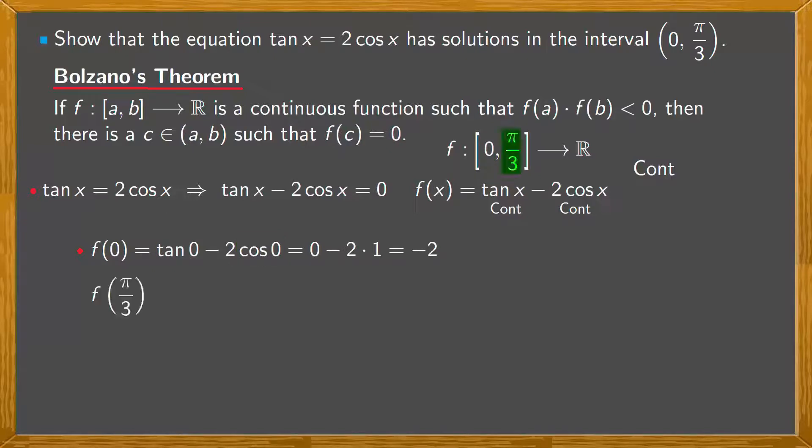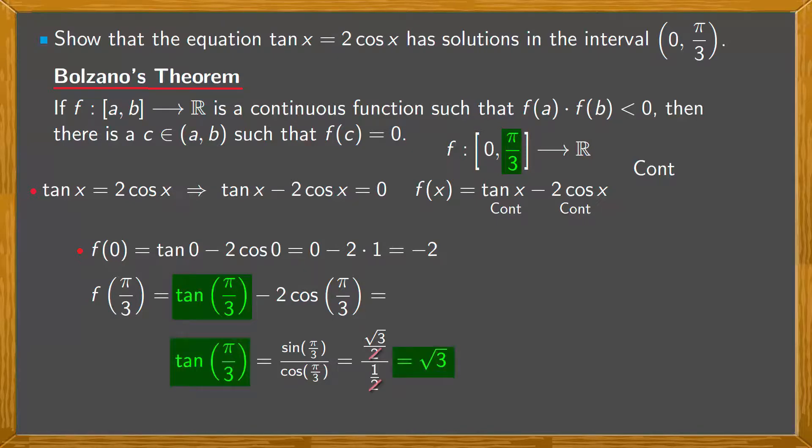Now we'll calculate f(π/3). So we have tan(π/3) minus 2 times cos(π/3). Now, tan(π/3), we'll write it here, is sin(π/3) over cos(π/3). Remember that sin(π/3) is √3/2 over cos(π/3), which is 1/2. So we end up with the square root of 3, and we'll substitute it here. Now we have minus 2 times cos(π/3), which we know is 1/2.